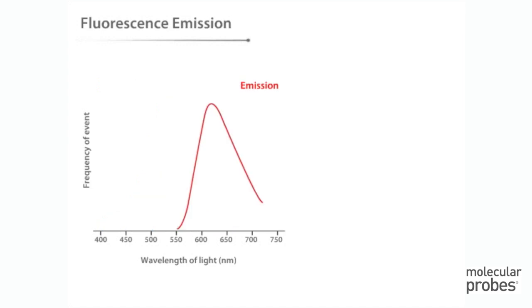Fluorescence emission behaves in a similar way. The fluorescence output of a fluorophore is most likely to occur at a particular wavelength. This wavelength is the emission maximum for that fluorophore. The excited fluorophore can also emit light at wavelengths near the emission maximum, as shown.